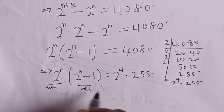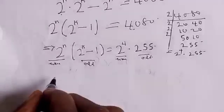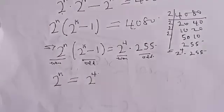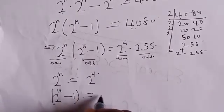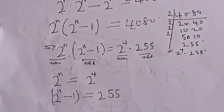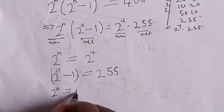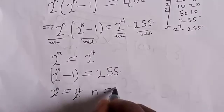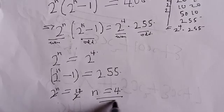Now, 2 raised to power n is even and (2 raised to power k minus 1) is odd. This means 2 raised to power n is equal to 2 raised to power 4, and (2 raised to power k minus 1) is equal to 255. Since we have the same base, n is equal to 4. We've now found the value of n.